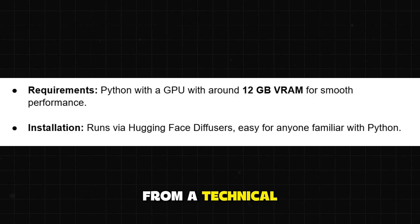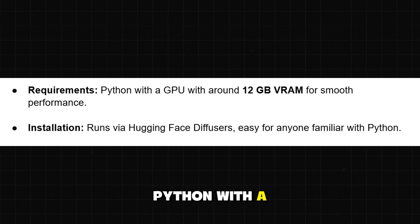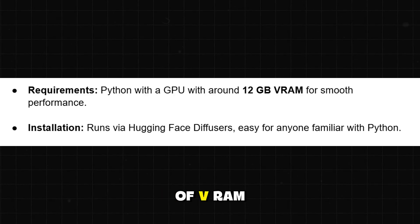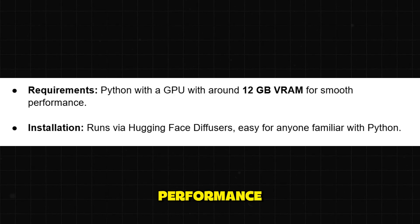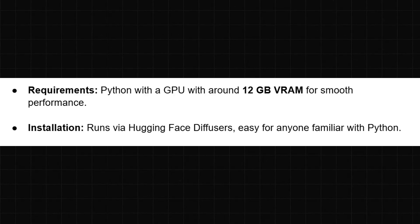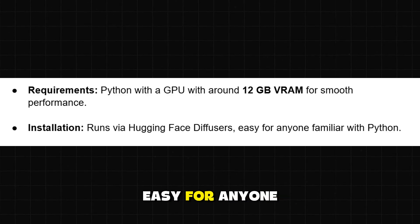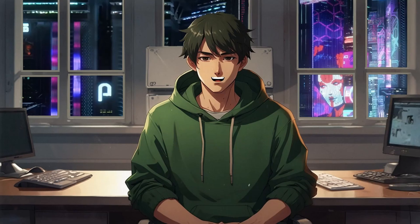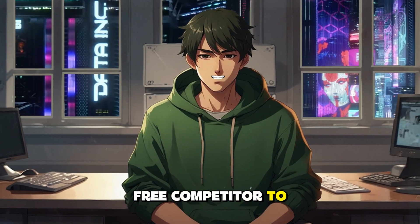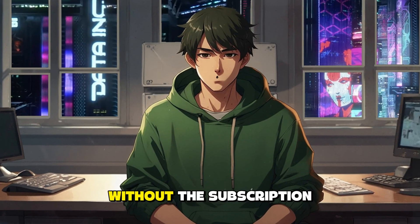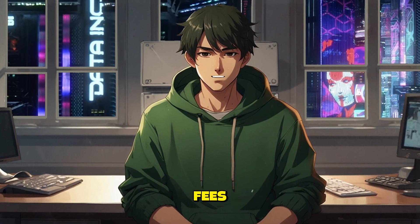From a technical angle, Quen Image requires Python with a GPU around 12 gigabytes of VRAM for smooth performance. It runs via Hugging Face Diffusers, easy for anyone familiar with Python. It's essentially a free competitor to MidJourney, without the subscription fees.